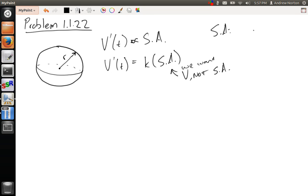Well, surface area is simply 4πr², right? And our volume, as we know, is 4/3 πr³.